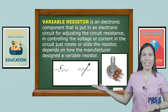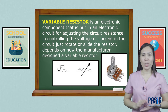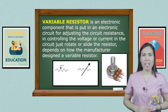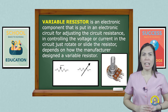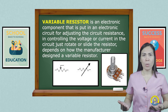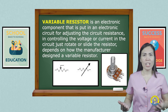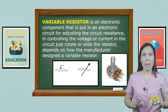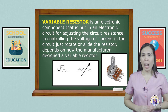A variable resistor is an electronic component that is placed in an electronic circuit for adjusting the circuit resistance. In controlling the voltage or current in the circuit, just rotate or slide the resistor, depending on how the manufacturer designed the variable resistor.